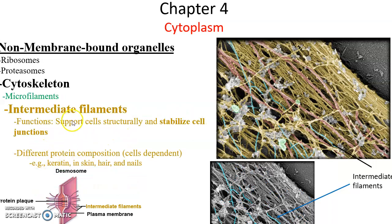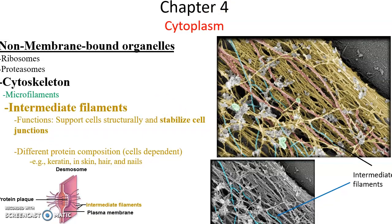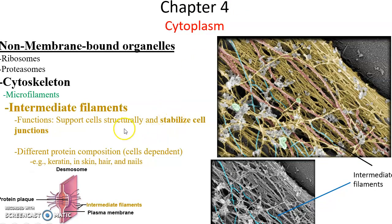Intermediate filaments function primarily in supporting cells structurally, helping give stressed cells their shape, and stabilizing the cell junctions where cells connect to other cells. They are very important where structures like desmosomes and hemidesmosomes are found. Intermediate filaments can be made from different kinds of proteins — for instance, in our skin, hair, and nails, intermediate filaments are made of a protein called keratin. They are not as dense as the microfilaments.